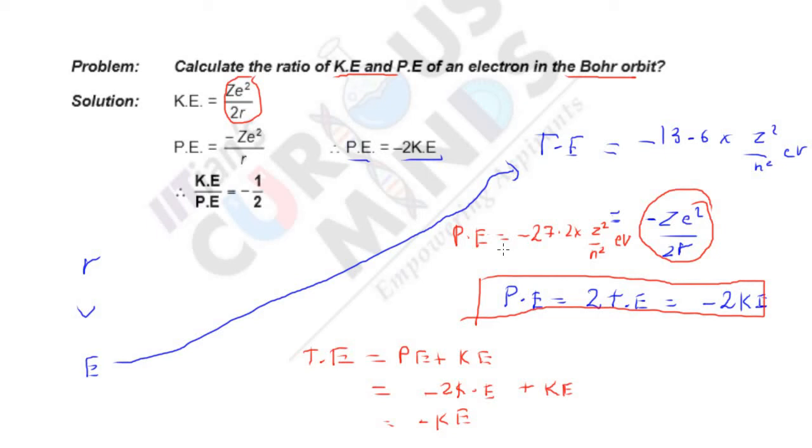And kinetic energy is 13.6 into Z squared by N squared. Trust me. That's all. Hope you guys understood the video.